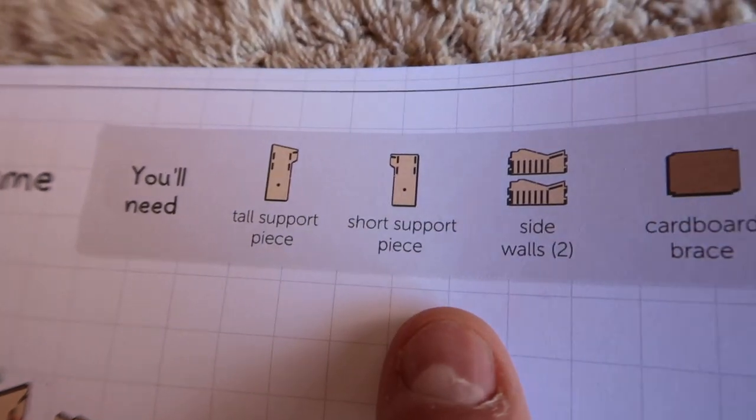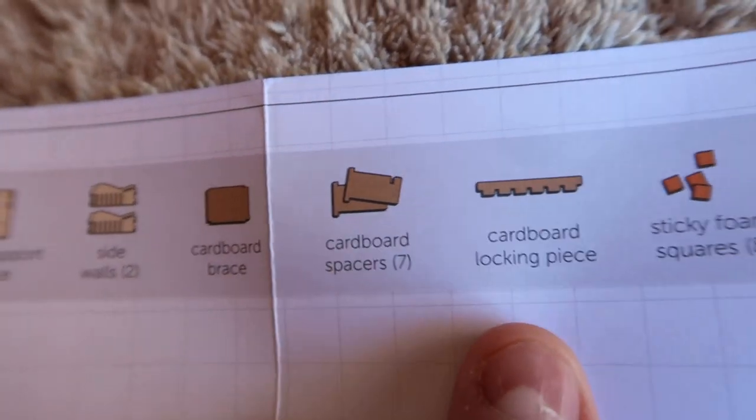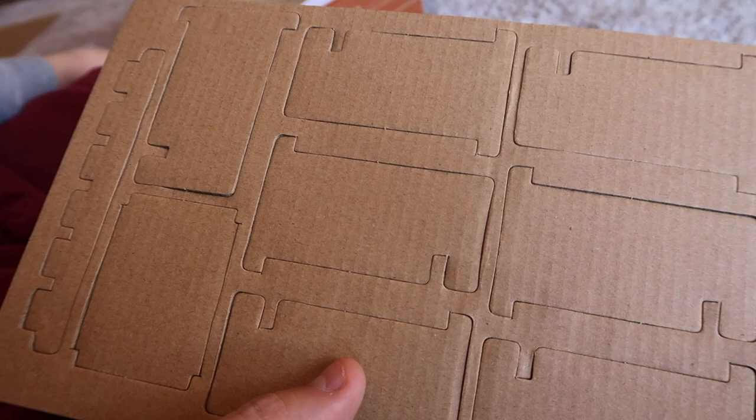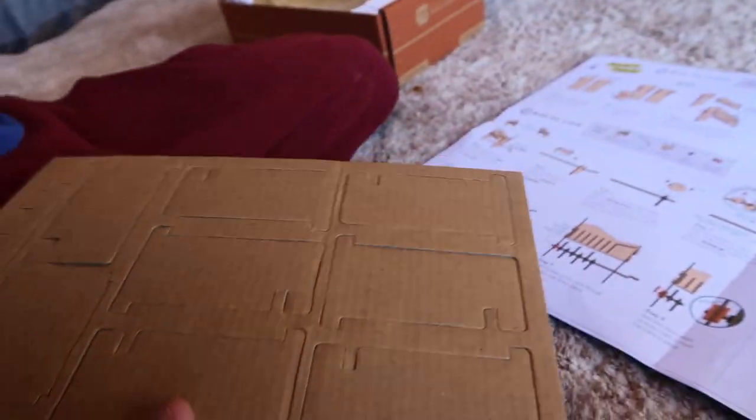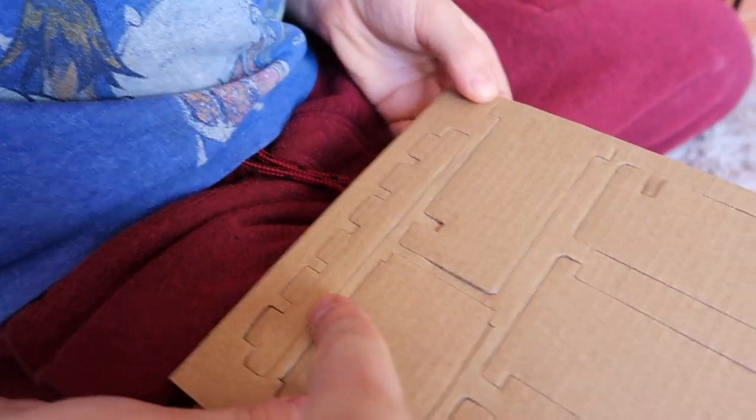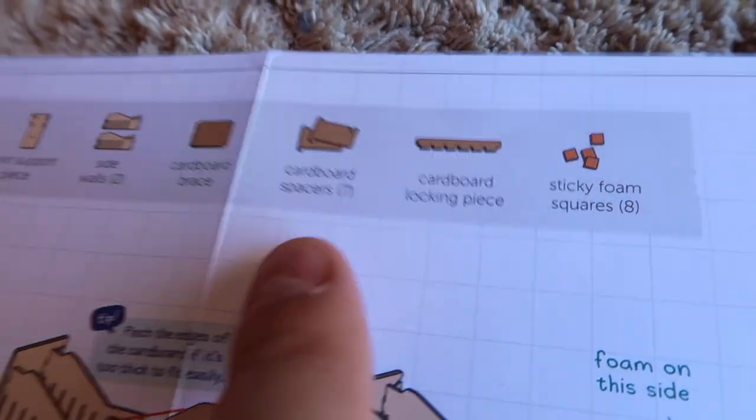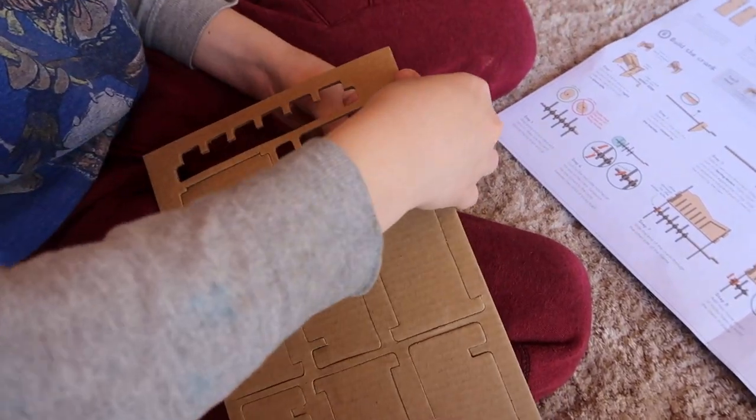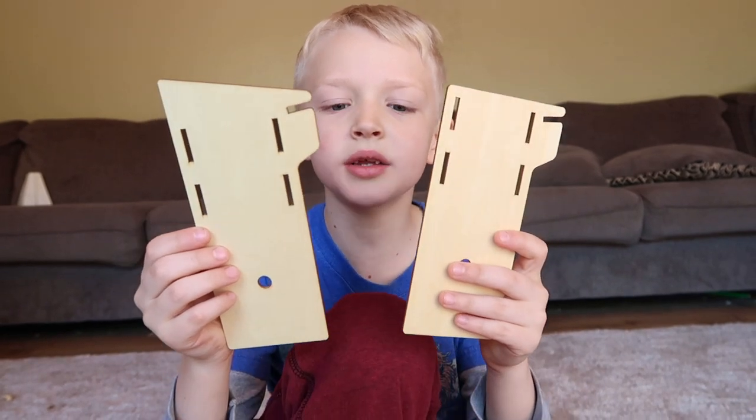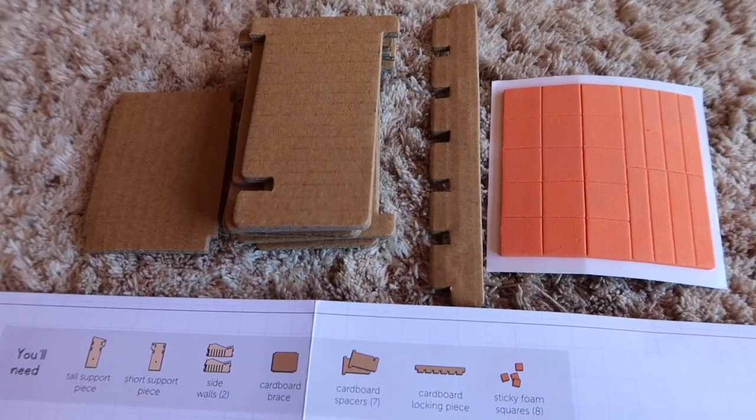It says start here. Build the frame and that has all the instructions of what you're gonna need. So let's get out those items so that we make sure that we have everything we need. Tall support piece, short support piece, sides, cardboard brace, cardboard spacers, cardboard locking piece, and sticky foam squares. I think these are the cardboard spacers. There's supposed to be seven of them.